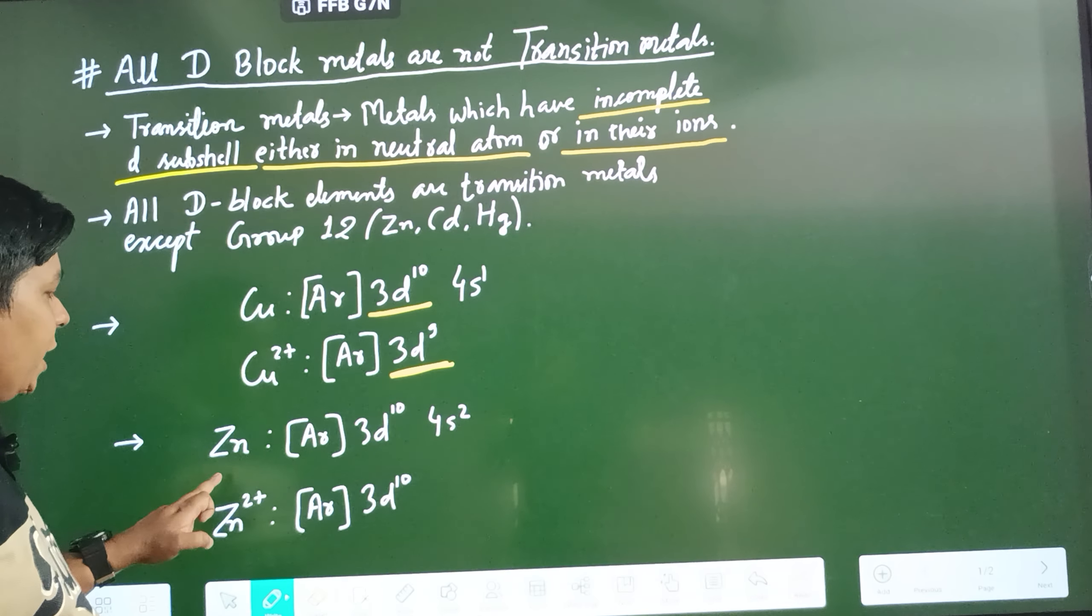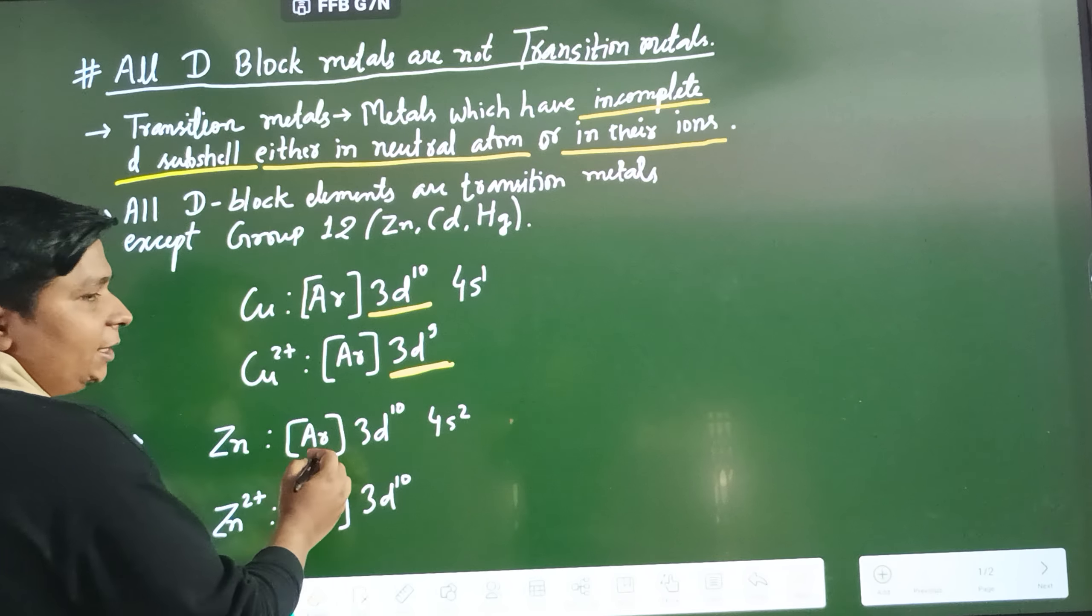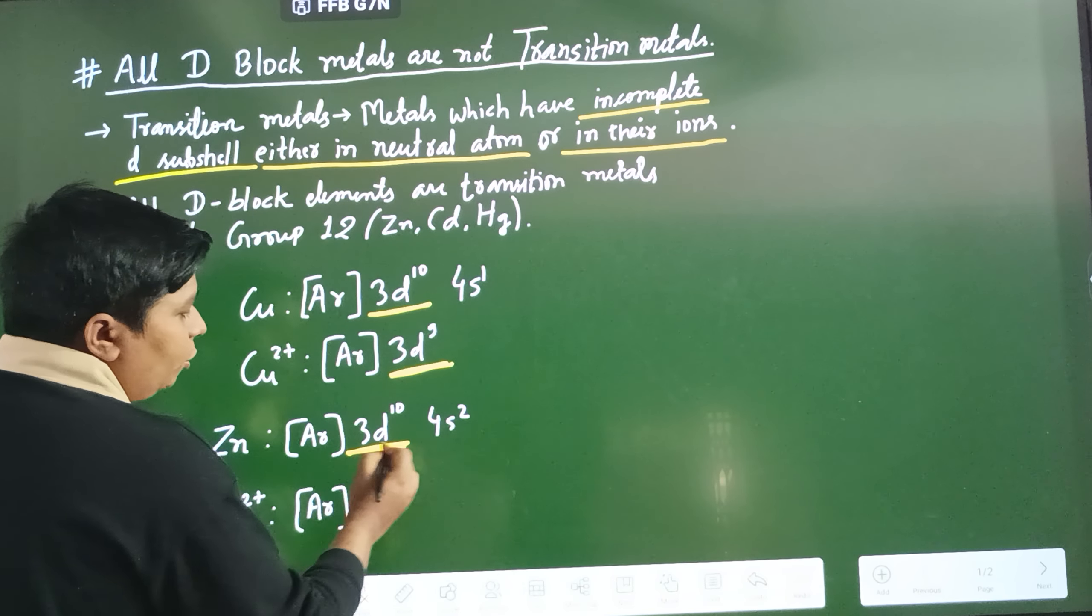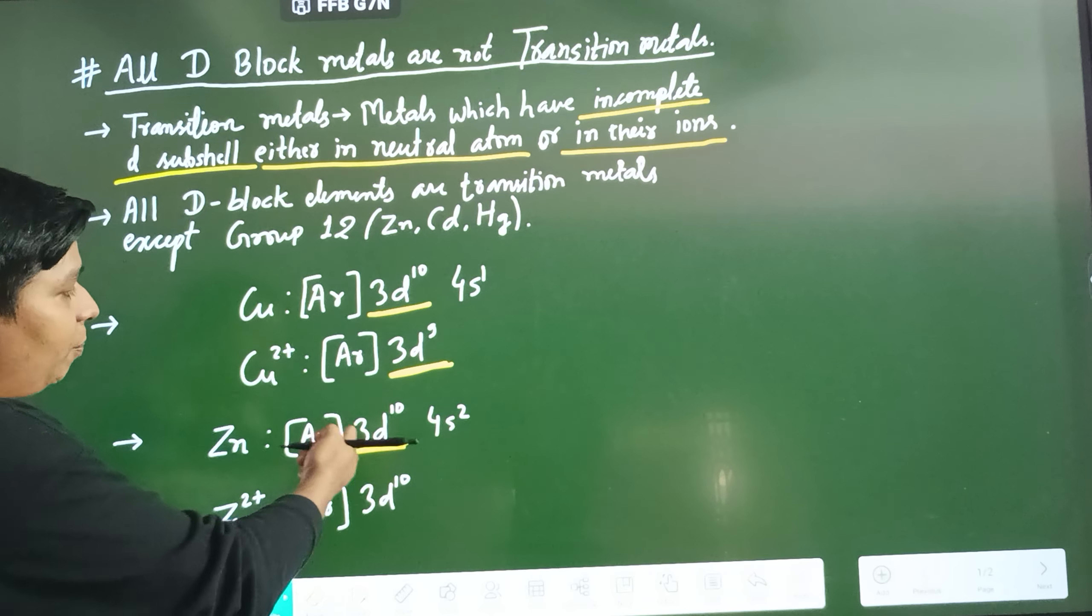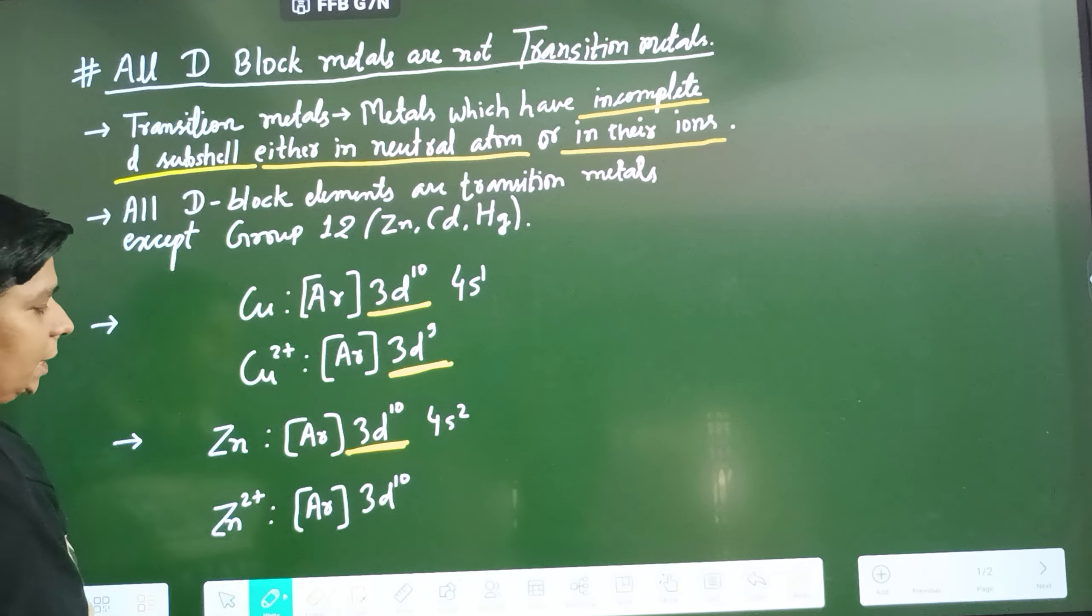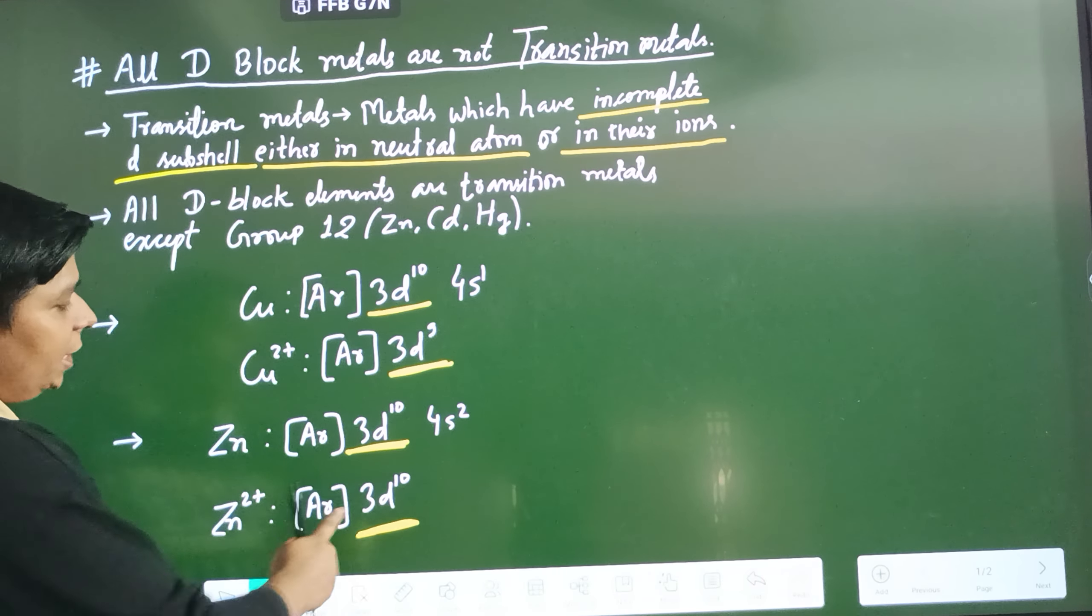But in the case of zinc, in its neutral state it has electronic configuration argon 3d10 4s2. Not an incomplete D-subshell, it is fully filled. Also in Zn2+, the D-subshell is fully filled. It is not incomplete.